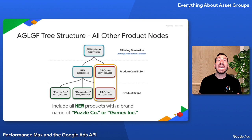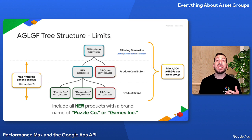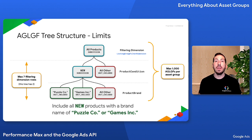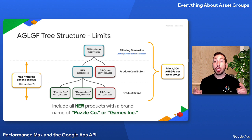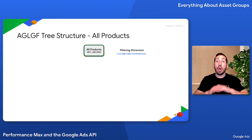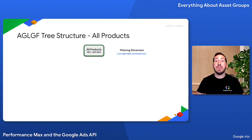Finally, each tree has a maximum of seven rows and each Asset Group can have a maximum of 1,000 Asset Group Listing Group filters. If you create an Asset Group Listing Group filter that is a unit included node with no children and no listing dimension on which to segment products, this represents all products in your feed, and this is a valid product partition tree all on its own.